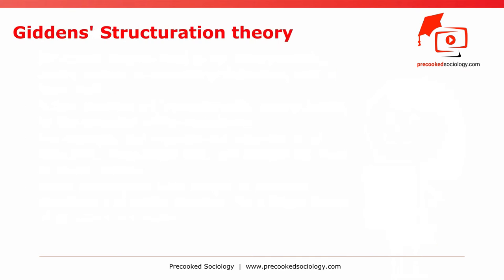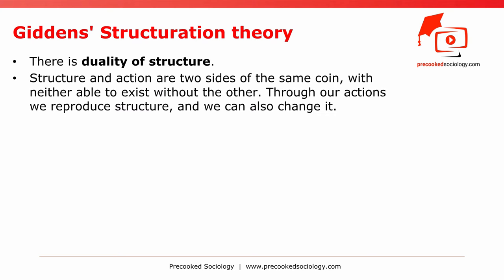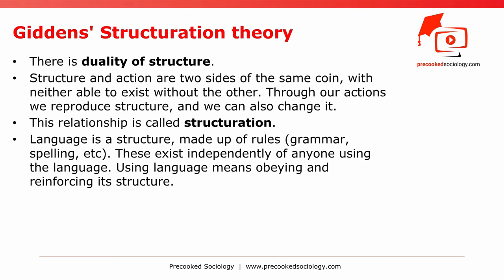Giddens' structuration theory. According to Giddens, there is a duality of structure. Structure and action — or agency, in Giddens' terminology — are two sides of the same coin, with neither able to exist without the other. Through our actions, we reproduce structure, and we can also change it. This relationship is called structuration.